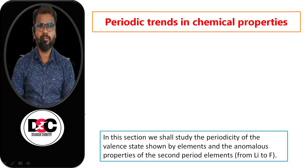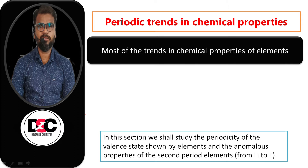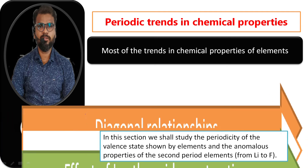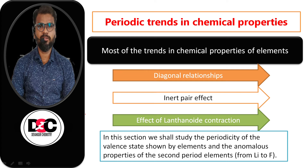Let's start talking about Periodic Trends in Chemical Properties. Most of the trends in chemical properties of elements, such as Diagonal Relationships, Inert Pair Effect, and the effect of Lanthanoid Contraction, will be dealt with along with the discussion of this group later in this unit. In this section we shall study the periodicity of the valence state shown by elements and the anomalous properties of the second period elements, that is from Lithium to Fluorine.